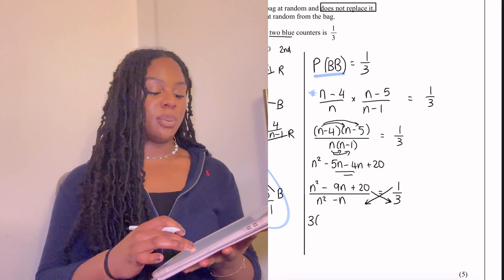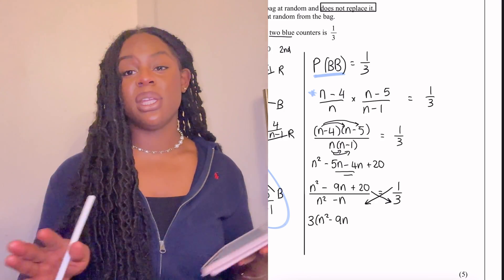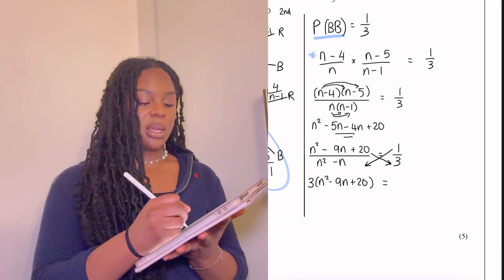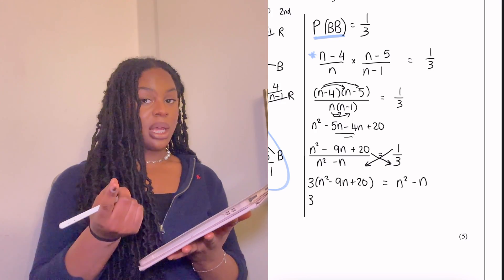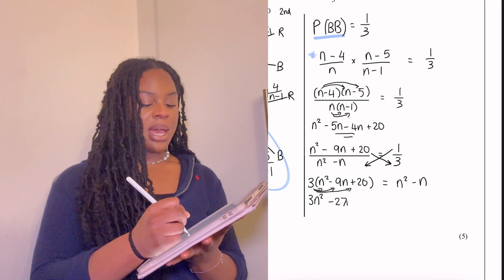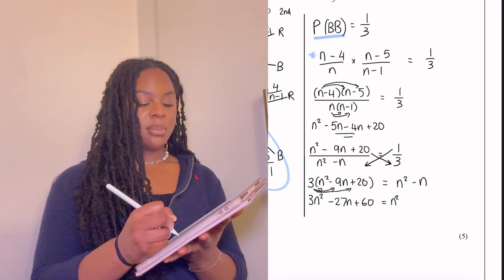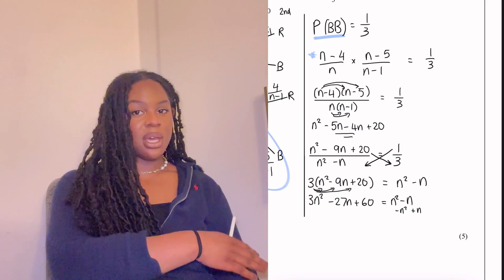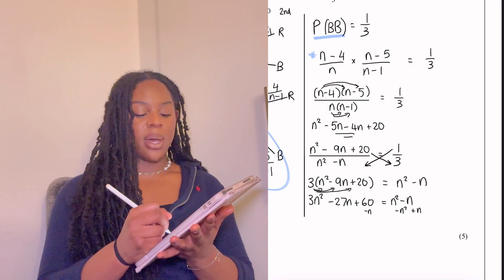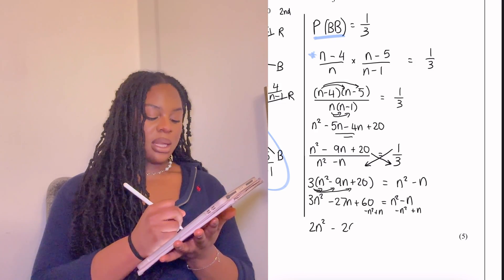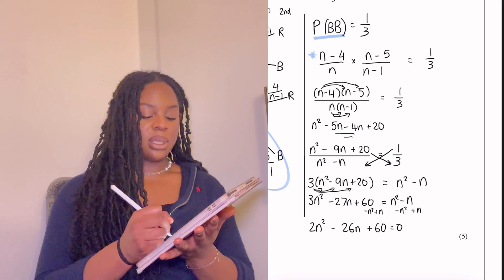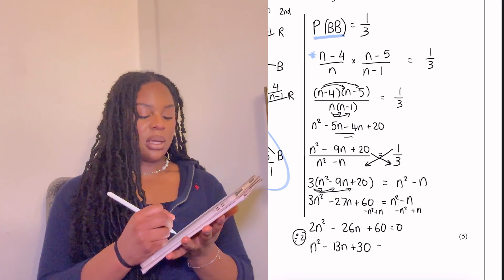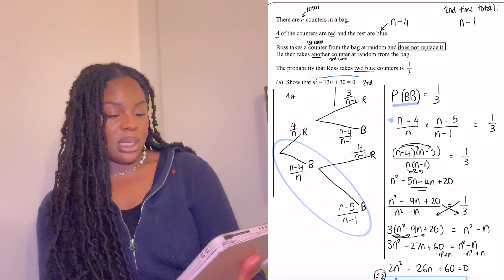We have two fractions being equated, so we cross-multiply. Multiplying out: 3(n² minus 9n plus 20) equals n² minus n. Expanding the left side: 3n² minus 27n plus 60 equals n² minus n. Moving everything to one side: subtract n² from both sides and add n to both sides, giving 2n² minus 26n plus 60 equals zero. Dividing the whole thing by two: n² minus 13n plus 30 equals zero. We have shown that n² minus 13n plus 30 equals zero — part a is done, five marks secured.